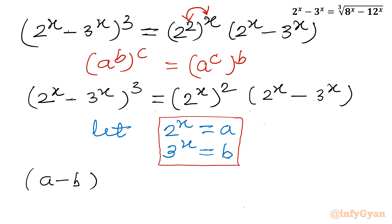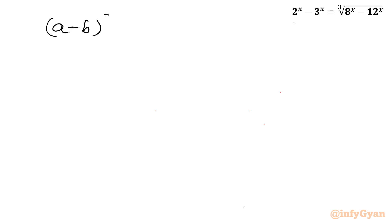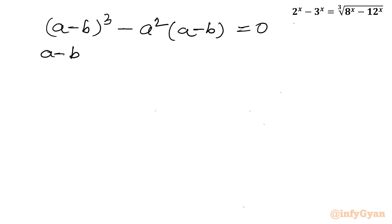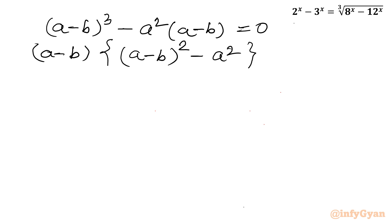Substituting, the left side is (a minus b)^3 and the right side is a^2 times (a minus b). Taking all terms to one side: (a minus b)^3 minus a^2(a minus b) = 0. Now (a minus b) is common, so factoring out gives (a minus b) times [(a minus b)^2 minus a^2] = 0.